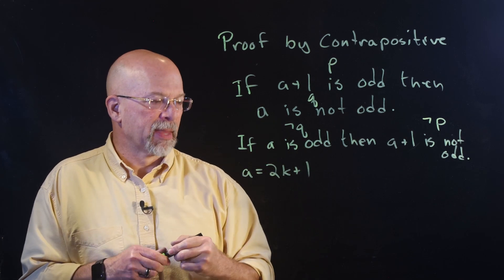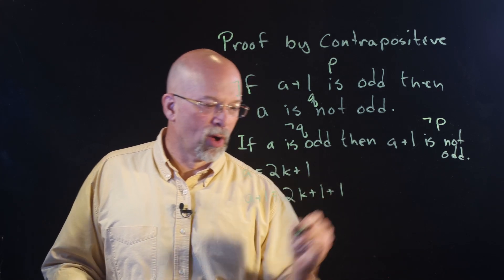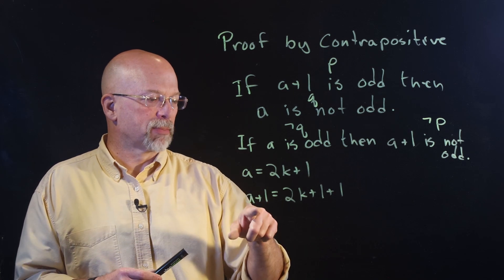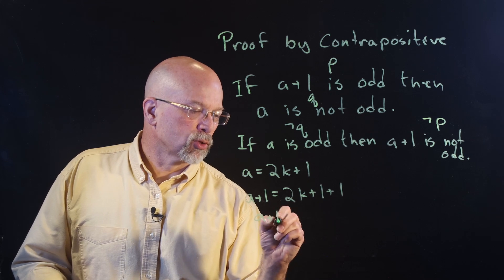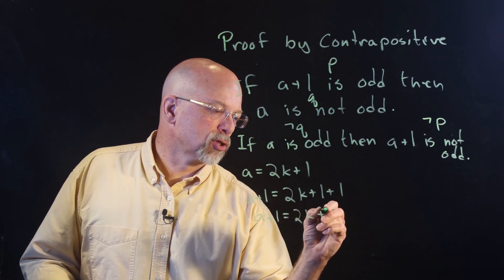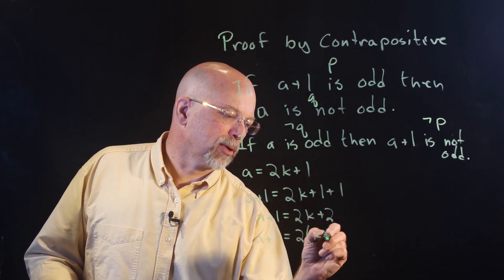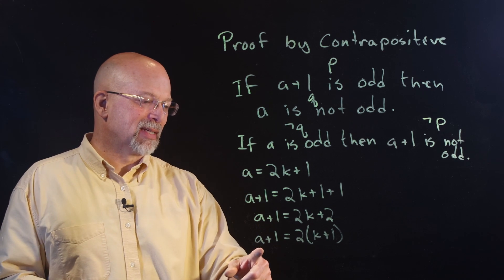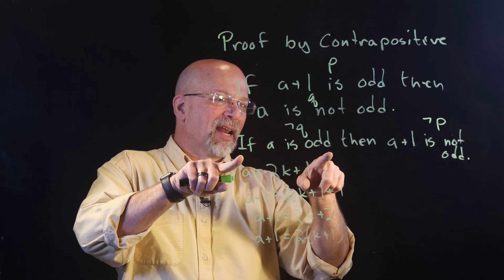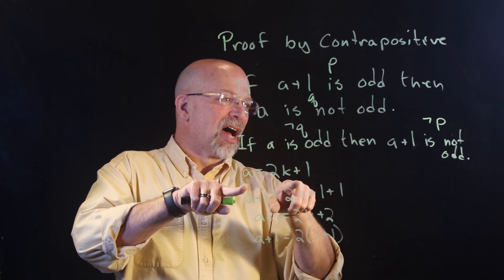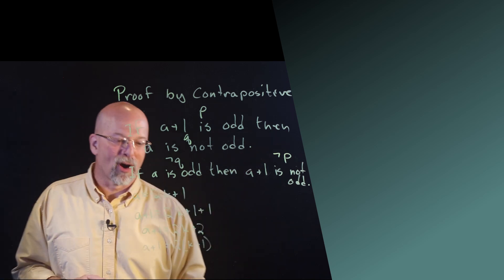So A plus 1 equals 2K plus 1 plus 1 — all I did was add 1 to both sides. That means A plus 1 equals 2K plus 2, which means A plus 1 equals 2 times (K plus 1). That means A plus 1 is even — it's not odd. And I've proven that if A is odd, then A plus 1 is not odd, kind of going backwards to prove our original premise.